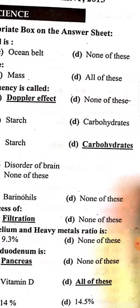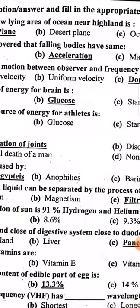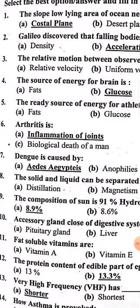The source of energy for the brain is glucose. The readily available source of energy for athletes is carbohydrates. Inflammation of joints is called arthritis.